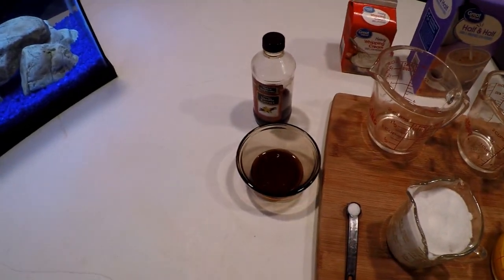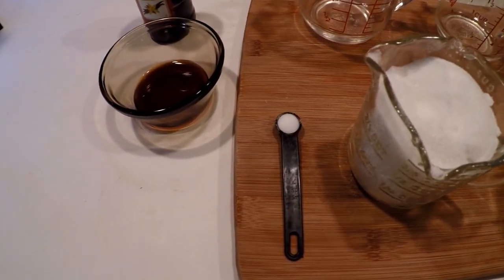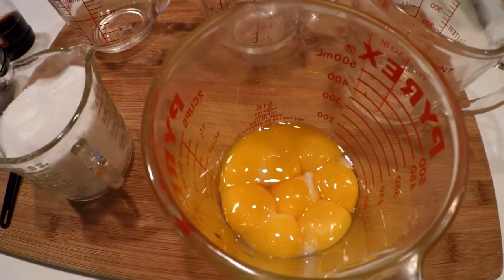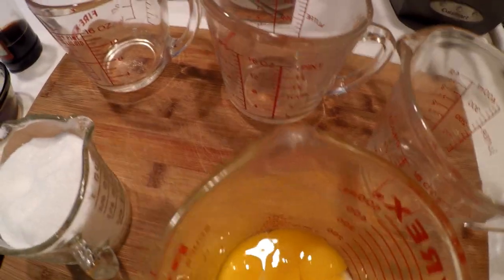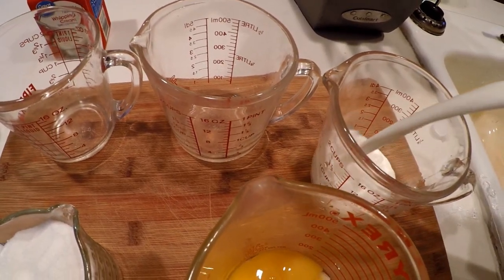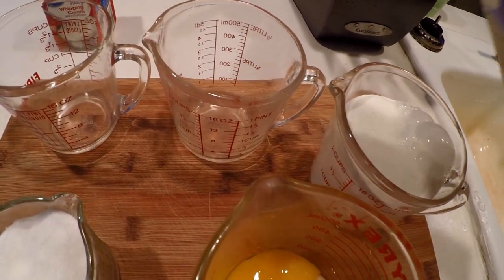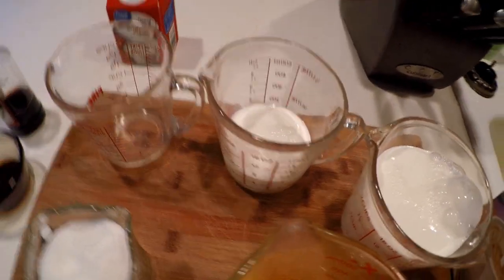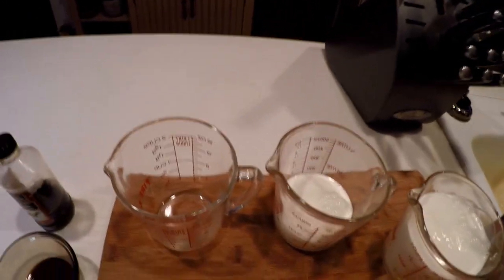4 teaspoons of vanilla extract, 1/8 to 1/4 teaspoon of regular salt, a cup of sugar, 8 egg yolks, those are large egg yolks. We're going to do 2 1/2 cups of half and half.